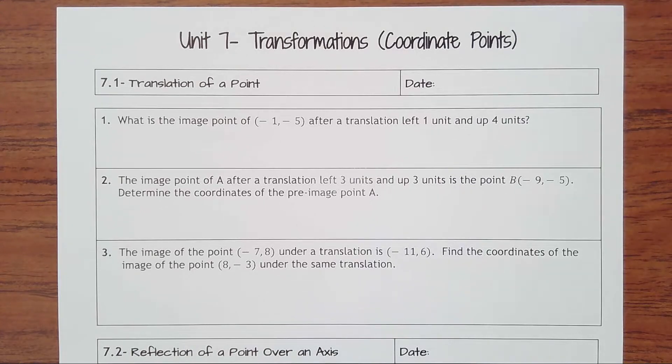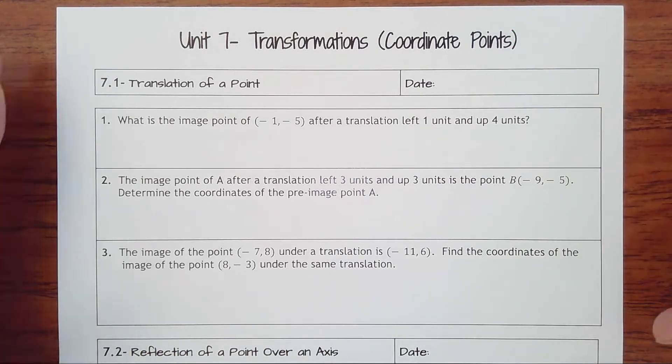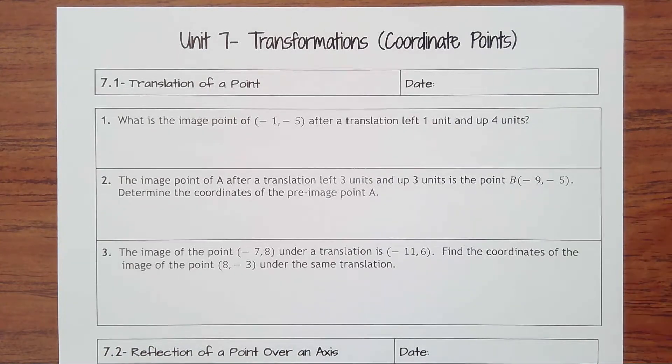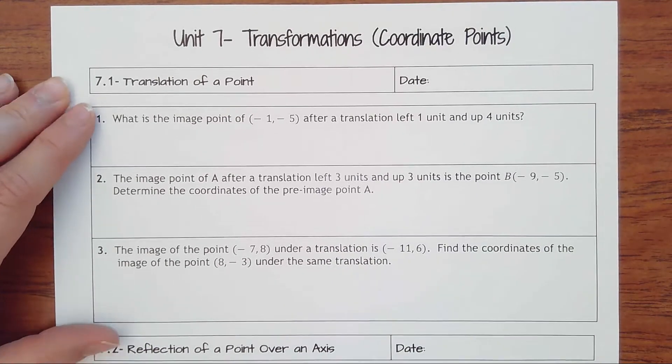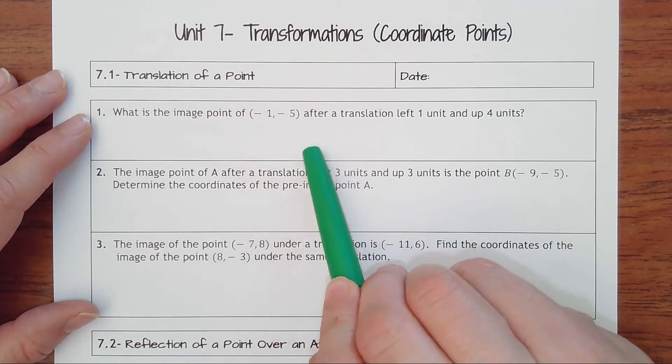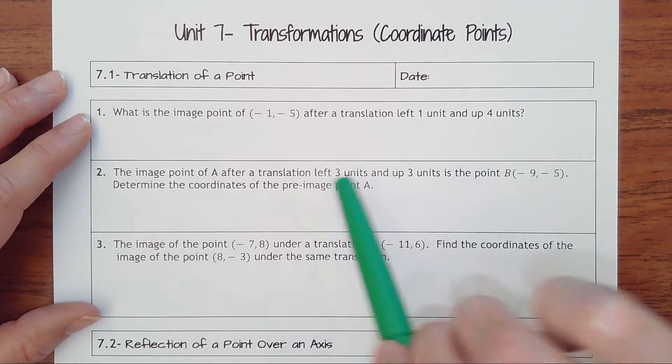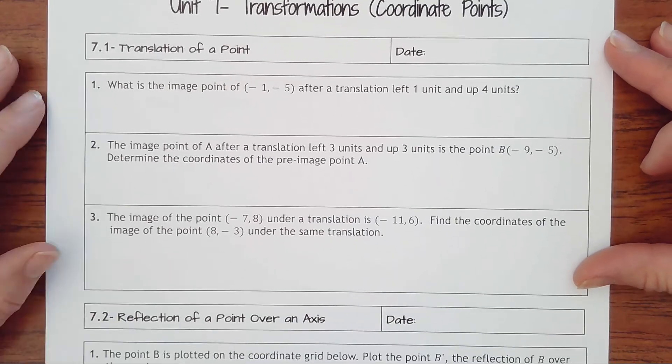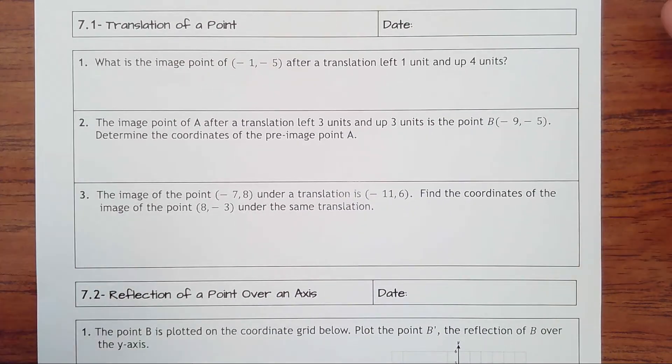Unit seven transformations. This is going to be pretty much exactly what we did but almost easier because instead of having shapes we have just a coordinate point. So we're really only doing a transformation to one ordered pair instead of three or four, sometimes five different points. 7.1 is translations. Remember, translations are sliding a point left or right, up or down. And so we're going to try to do this without a coordinate plane. Number one says: